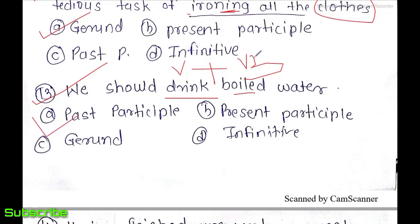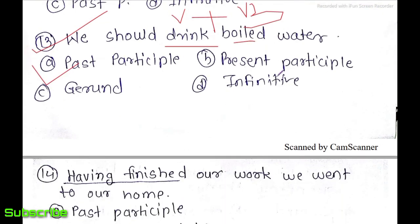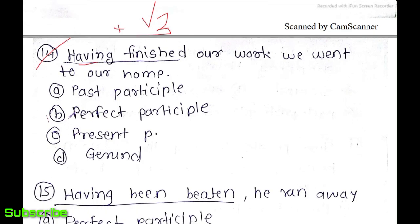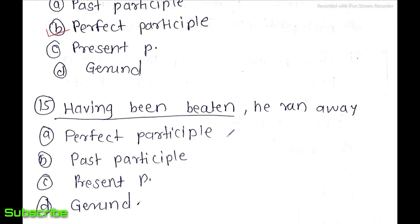Question 13: 'We should drink boiled water' — 'boiled' follows the V plus V3 rule, so this is the past participle. Question 14: 'Having finished our work, we went to our home' — 'having' plus V3 ('finished') — this is the perfect participle. Question 15: 'Having been bitten, he ran away' — 'having been' plus V3 — this is again the perfect participle.